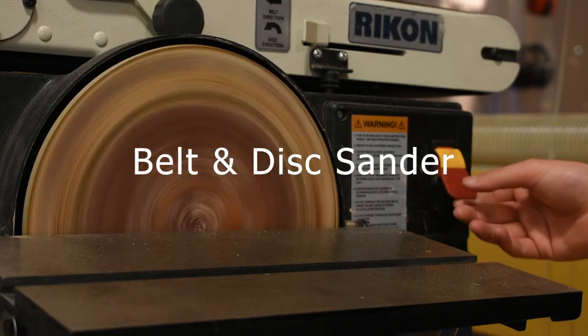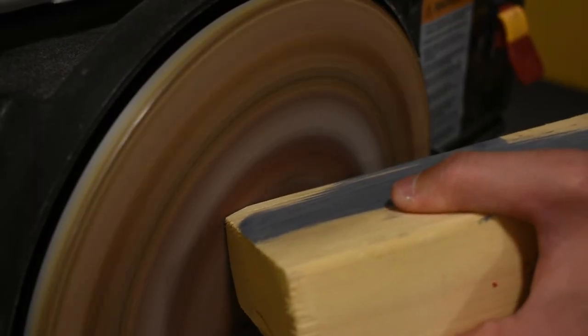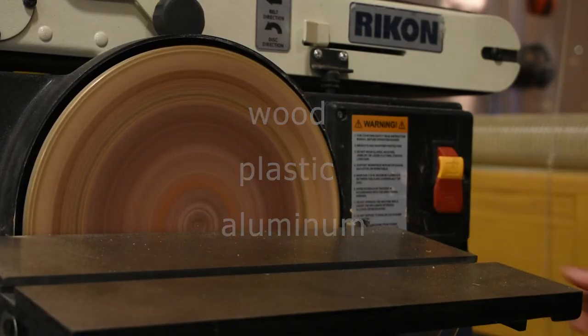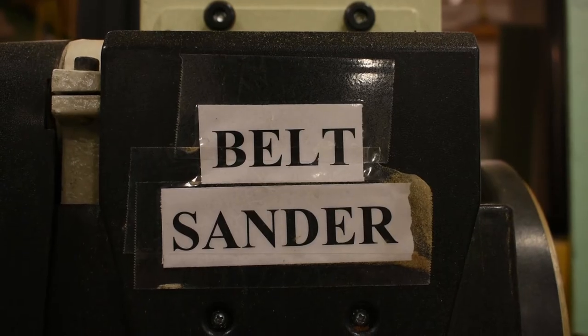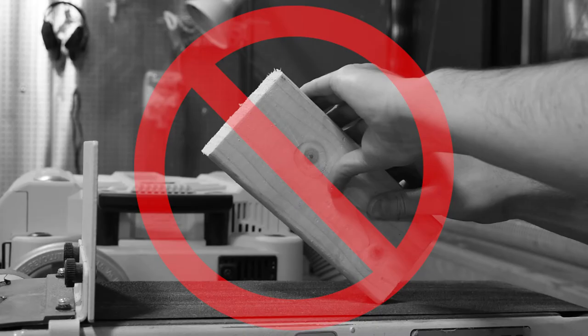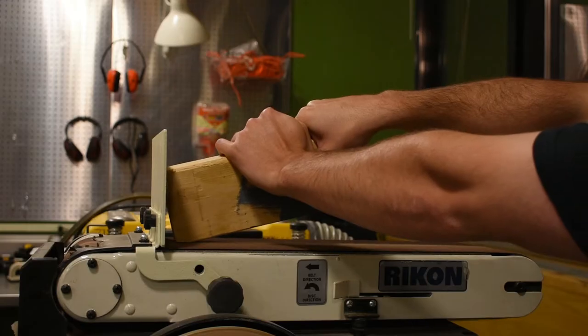The belt sander is used to smooth out all the rough edges you might get from cutting and drilling. Wood, plastic, and aluminum can be used at this machine, which has two sanding options. When sanding, never angle the stock up. This causes kickback. Only sand angled down or straight.